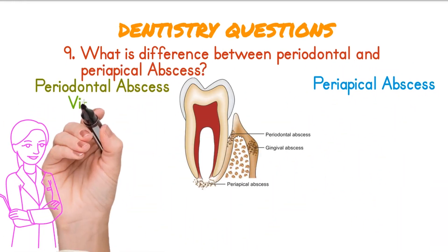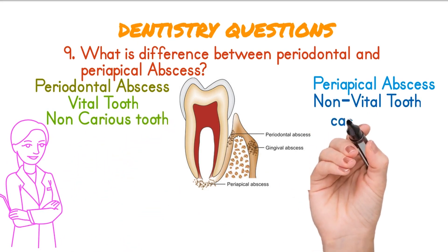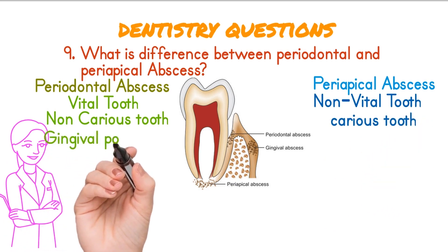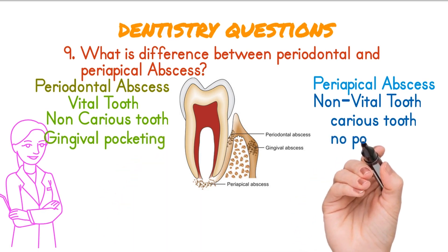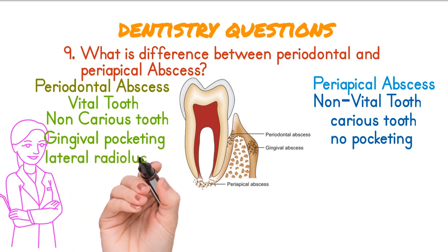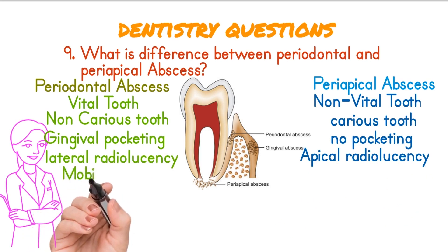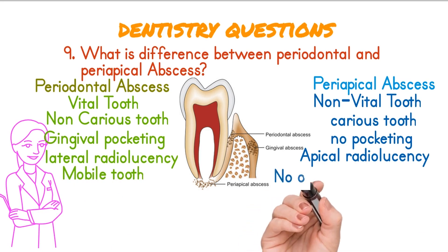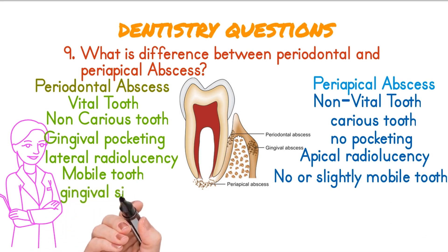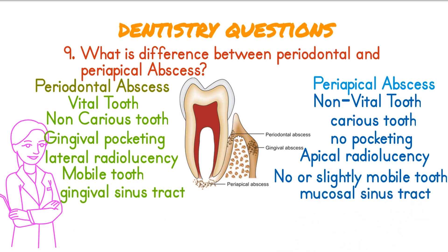What is the difference between a periodontal and a periapical abscess? In a periodontal abscess the tooth is vital, while in a periapical abscess the tooth is non-vital. There is no carious tooth in a periodontal abscess, while in a periapical abscess the tooth is usually carious. Gingival pocketing is present in a periodontal abscess and absent in a periapical abscess. On radiographs, there is lateral radiolucency in a periodontal abscess and apical radiolucency in a periapical abscess. The tooth is mobile in a periodontal abscess, while there is no mobility in a periapical abscess. Sinus tracts in a periodontal abscess are located in keratinized gingiva, while sinus tracts of a periapical abscess are located in the mucosa overlying the apex of the tooth.